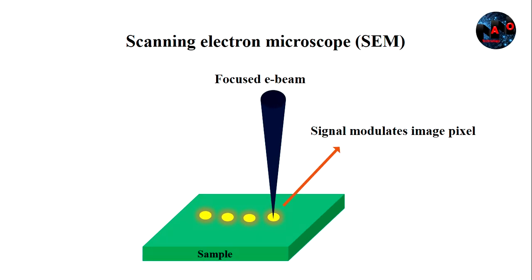In SEM, the electron beam is focused to a spot and is scanned sequentially across the specimen. At each location, signals are emitted from the specimen and collected by detectors. The detector signal is synchronized with the known location of the beam and the specimen.